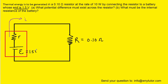The question tells us that thermal energy is generated at the rate of 10 watts, and we know that watts is a unit of power. We also know that power is equal to the potential difference supplied by the battery squared divided by its resistance — meaning the potential difference across the resistor. So we can actually solve this equation for the potential difference across the resistor.